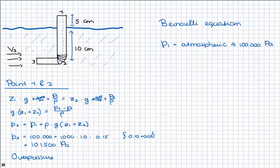But to calculate the overpressure, you have to calculate it in another way, and this is P2 minus P1, which is 1500 pascals.